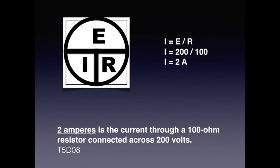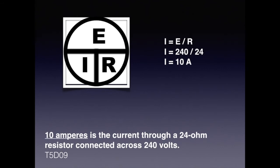In the next question, we are asked to solve for current given a voltage of 200 volts and a resistance of 100 ohms. Covering the I on the chart, we see that I equals E divided by R. Dividing 200 by 100 gives us 2 amps. For the exam, know that 2 amperes is the current through a 100 ohm resistor connected across 200 volts. For 240 volts and 24 ohms, dividing 240 by 24 gives 10 amps. Know that 10 amperes is the current through a 24 ohm resistor connected across 240 volts.